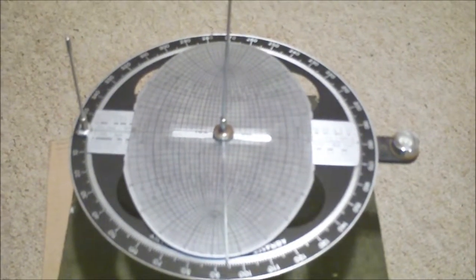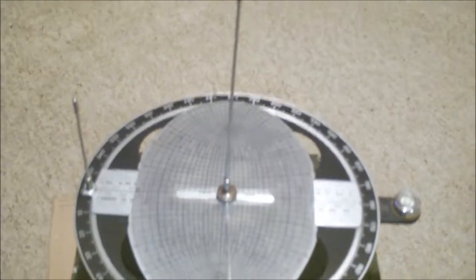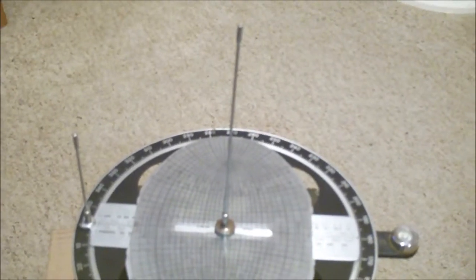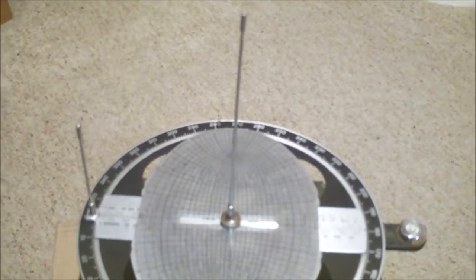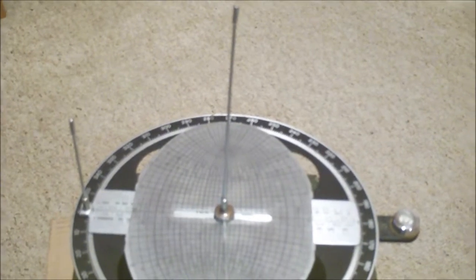Here is our Abrams sun compass set up for use at night. We have a tall gnomon in the center and a shorter one on the back end of the date bar.